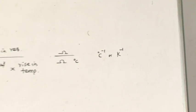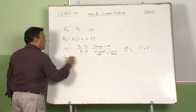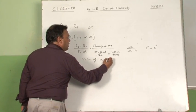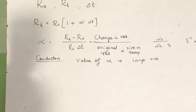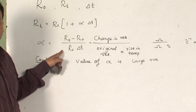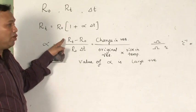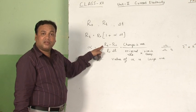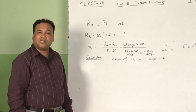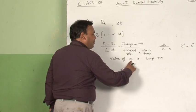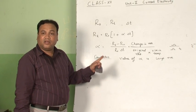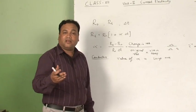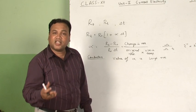What is the significance of alpha? In the case of conductors, the value of alpha is large and positive. This means the right-hand side is large and positive, so the final resistance is more than the initial resistance. Therefore, with a rise in temperature, the change in resistance of conductors is very large.